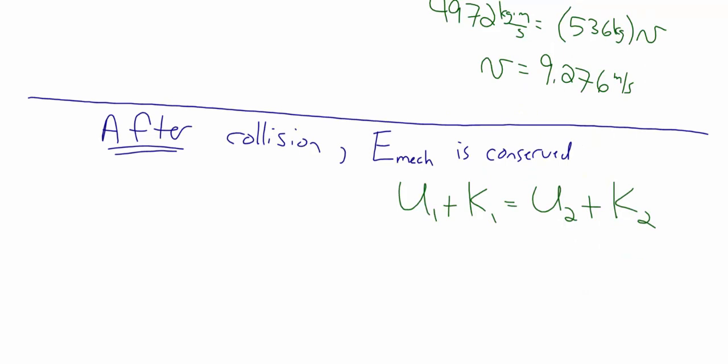Now we're going to use conservation of energy. After the collision, mechanical energy is conserved, because the only forces acting on the objects are conservative forces. We cannot apply energy conservation across the collision itself — the force between the two objects during the collision is a non-conservative force and the energy is changing. So we use momentum to analyze the collision, and then conservation of energy after the collision.